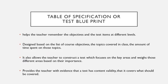A table of specification, also known as a test blueprint, helps the teacher remember the objectives and the test items at different levels. It is designed based on the list of course objectives, the topics covered in class, and the amount of time spent on those topics. It also allows the teacher to construct a test which focuses on the key areas and weights those different areas based on their importance. It provides the teacher with evidence that the test has content validity — that it covers what should be covered.